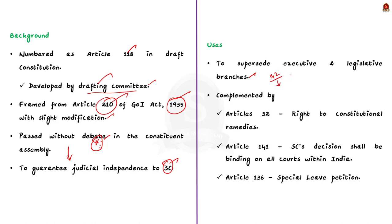The Supreme Court will use the power guaranteed under Article 142 to act as a legislator. They have the power to strike down certain provisions or the amendment provisions of an Act or rules. Secondly, Article 142 is complemented by several articles. The first is Article 32, which talks about the right to constitutional remedies.